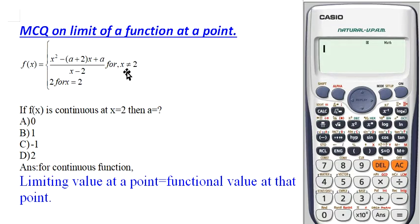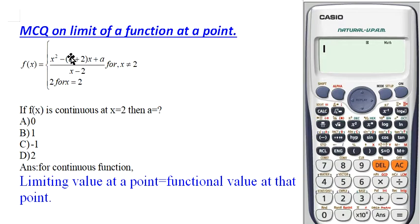The first piece is defined for x not equal to 2. We are going to find the limiting value at x = 2, so we don't use the exact value x = 2 — we take neighbor values very close to 2. We will use this first piece for the limiting value calculation.